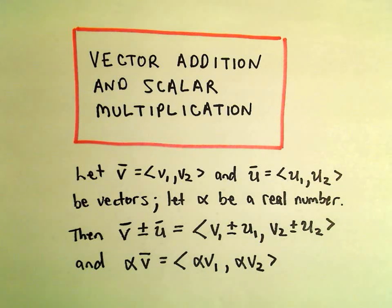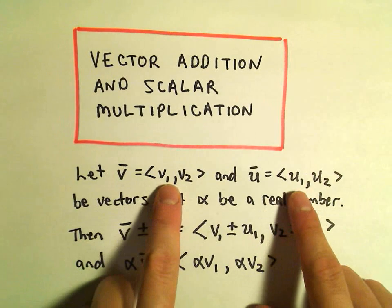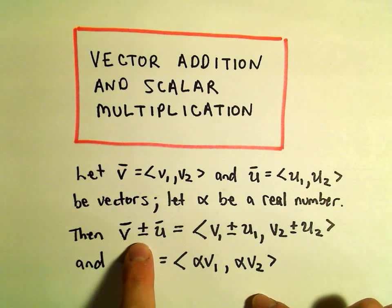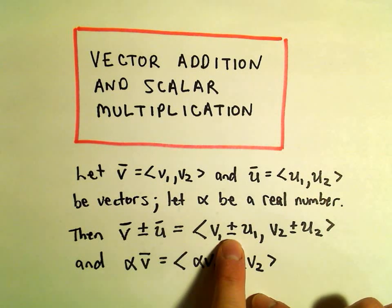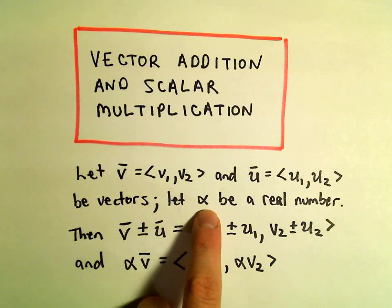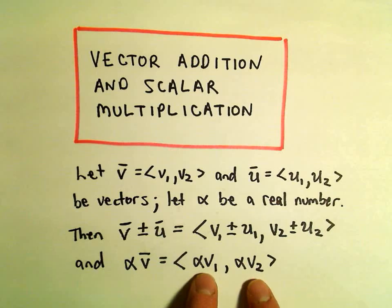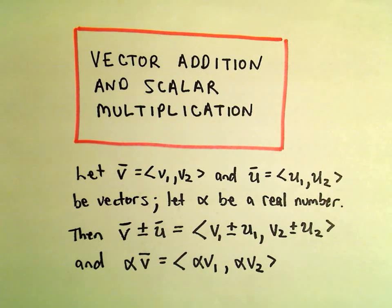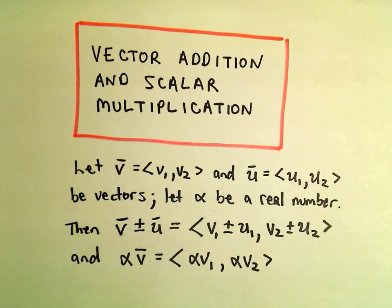Okay, in this video, we're going to talk about vector addition and scalar multiplication. All it really says is if you have two vectors, if you want to add or subtract them, you either add or subtract their corresponding components. If you multiply a vector by a real number, you just multiply each component by that real number. So nothing worse than that.